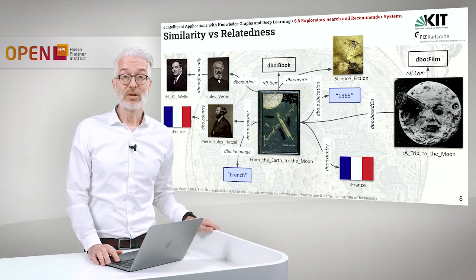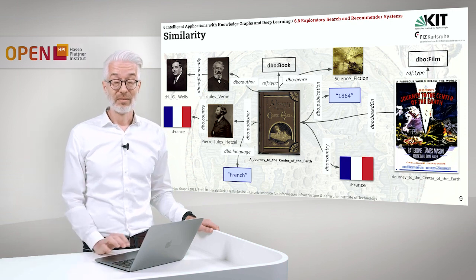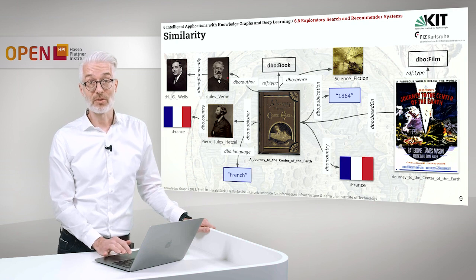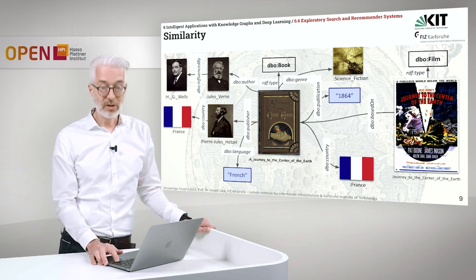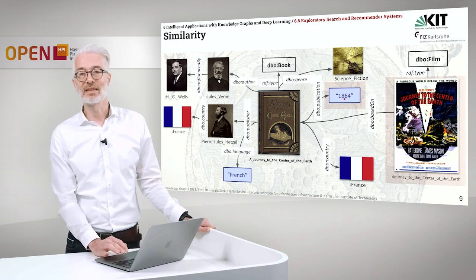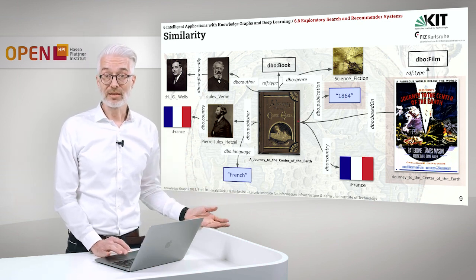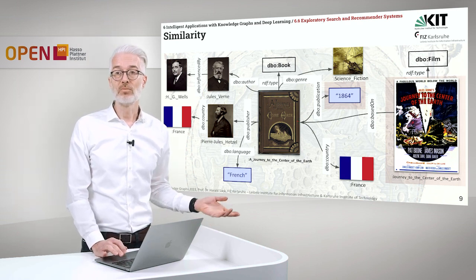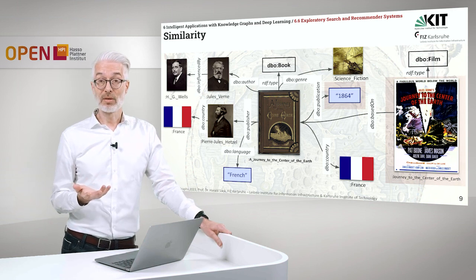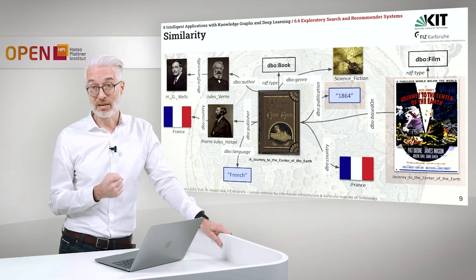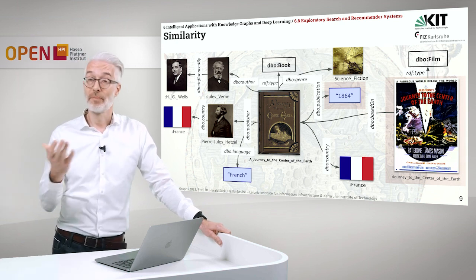Let's see what we can find if we go for similarity first. Going back and forth, you see there is another book by the same author, same genre, same publisher, same country, same language — only a few things are different. The publication date is 1864 instead of 1865, which might suggest this book is the predecessor of 'From the Earth to the Moon.' These two books are rather similar because they share lots of properties and property values with our original search intent. That would be a very good recommendation.